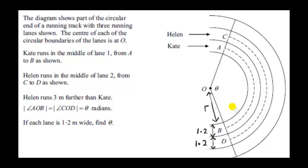The diagram shows part of a circular end of a running track with three running lanes shown. The center of each of the circular boundaries of the lanes is at O. Kate runs in the middle of lane one from point A to point B. Helen runs in the middle of lane two from point C to point D. And we're given that Helen runs three meters further than Kate. So let's suppose that Kate runs a distance L. That's along this dotted line. Well, Helen runs a distance L plus three. We are given the width of each lane. It's 1.2. So let the radius of the inner circle be R. We don't know what it is. So the radius of Kate's path is going to be R plus half the width of the lane. Well, half of 1.2 is 0.6. Now in blue, I will show the radius of Kate's path. So we want the distance from O to this dotted line here. Well, you see, that's R, which I'm calling this radius of the inner circle, plus 1.2 plus 0.6.